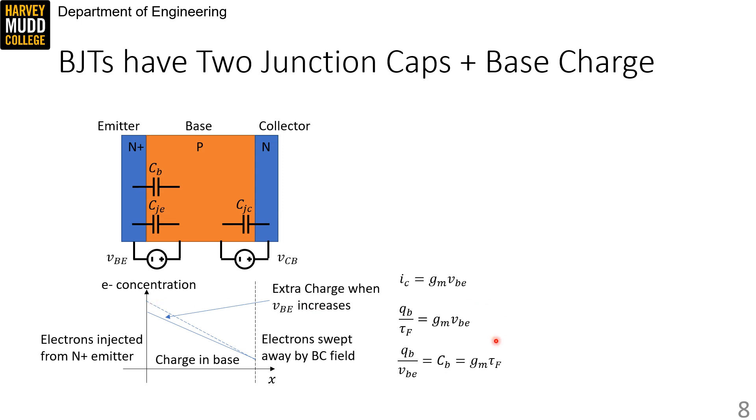Second, we note if the base transit time is linear, which it more or less is in a small signal model, then the current in the base can be calculated as the total charge in the base QB divided by the transit time tau F.